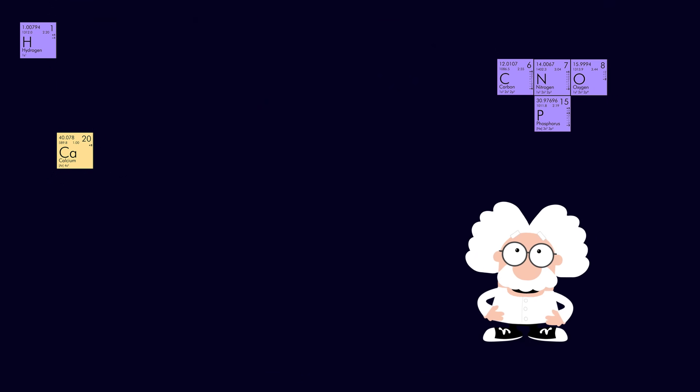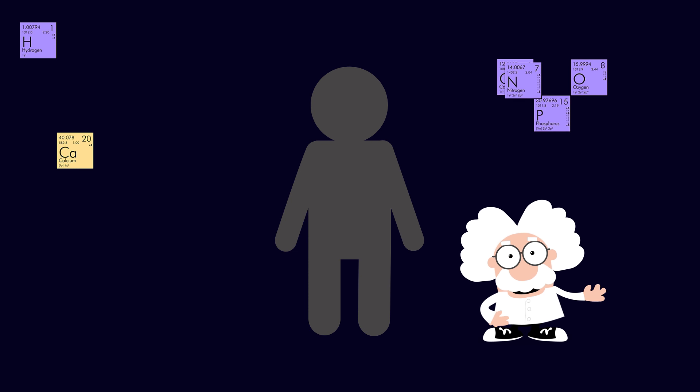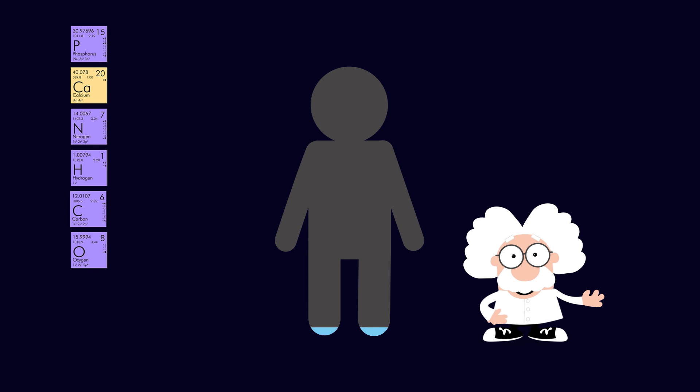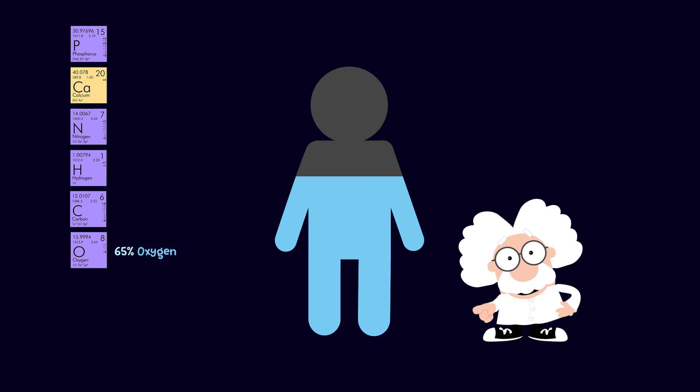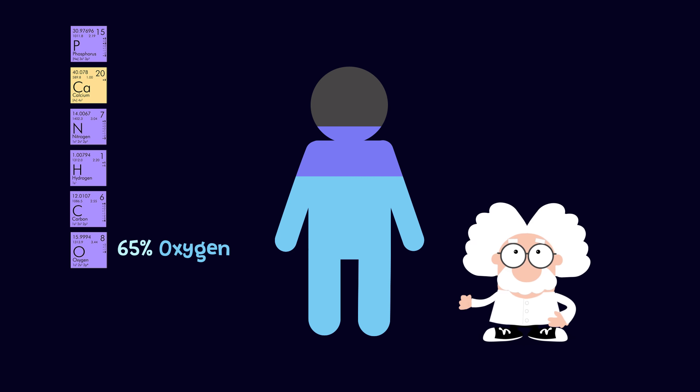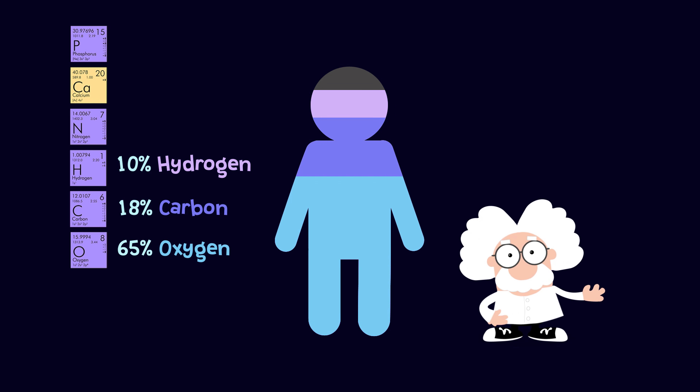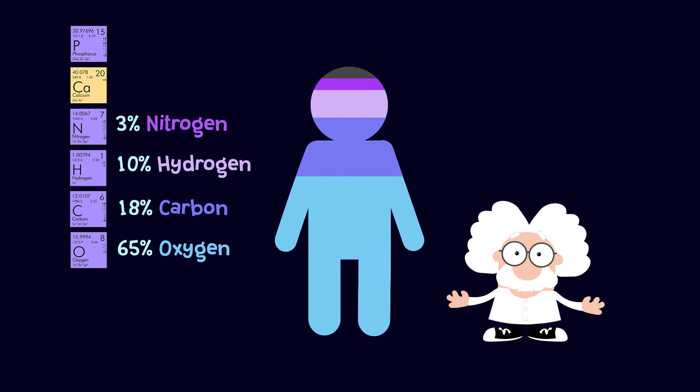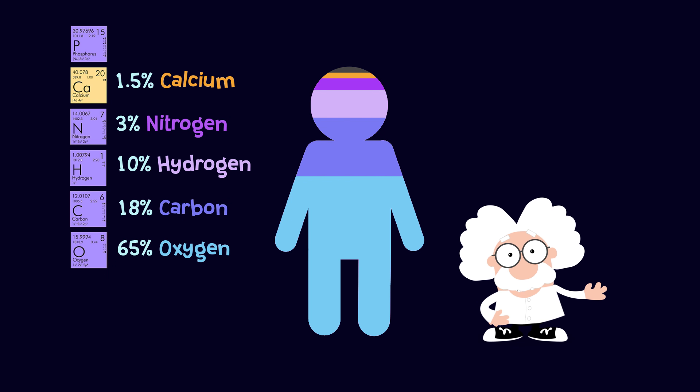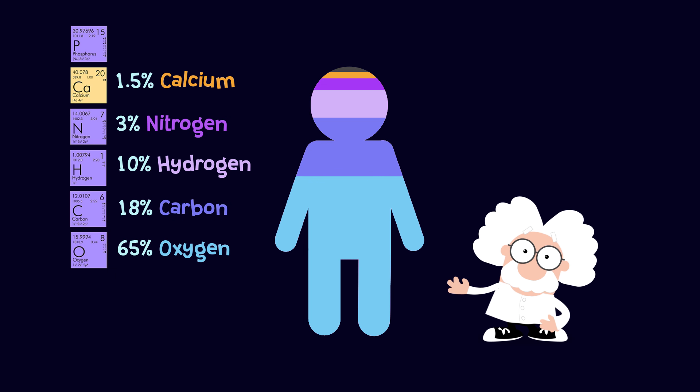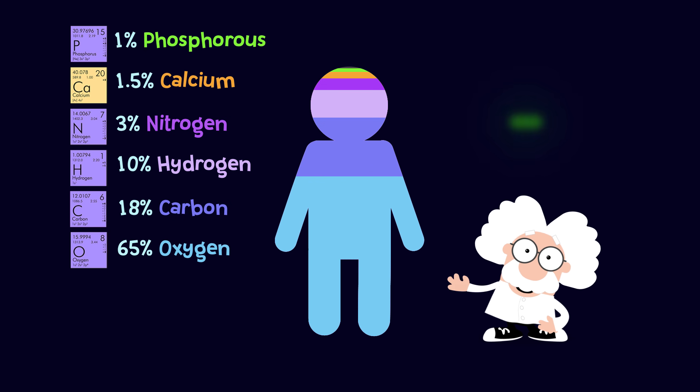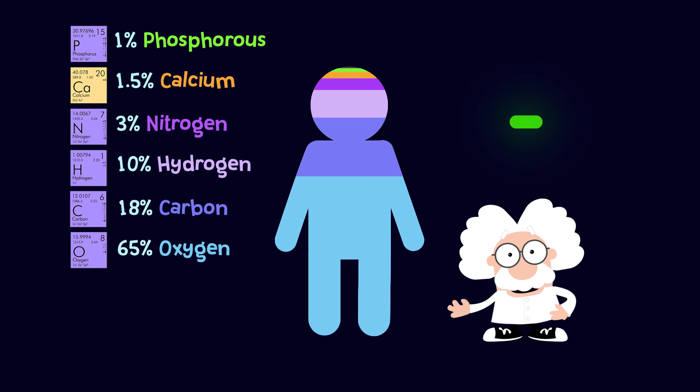Surprisingly, almost 99% of your body is made up of just six of these elements. You are 65% oxygen, the stuff we breathe. 18% carbon, the stuff that makes charcoal and diamonds. 10% hydrogen, the stuff that makes the sun shine. 3% nitrogen, which fills most of the Earth's atmosphere. 1.5% calcium, which is good for your bones. And 1% phosphorus, a strange glowing element.